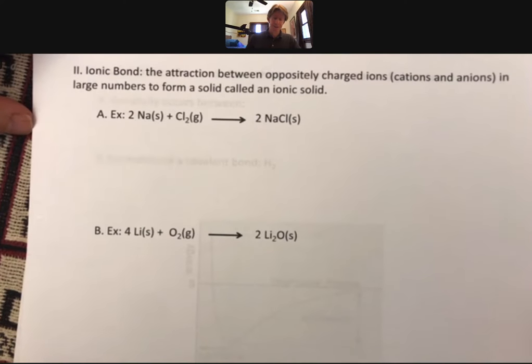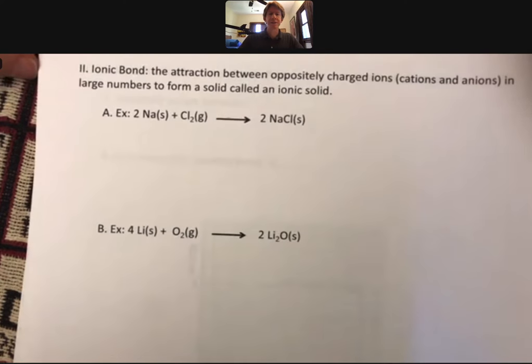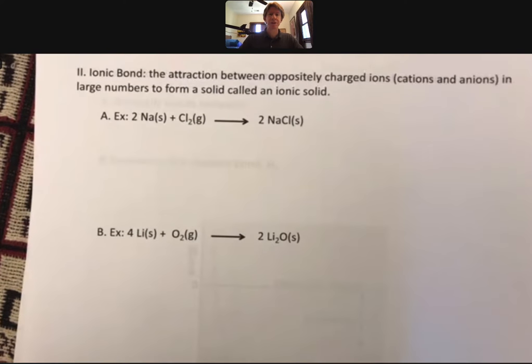What is an ionic bond? An ionic bond is the attraction between oppositely charged ions - cations are positive and anions are negative - in large numbers to form a solid called an ionic solid.